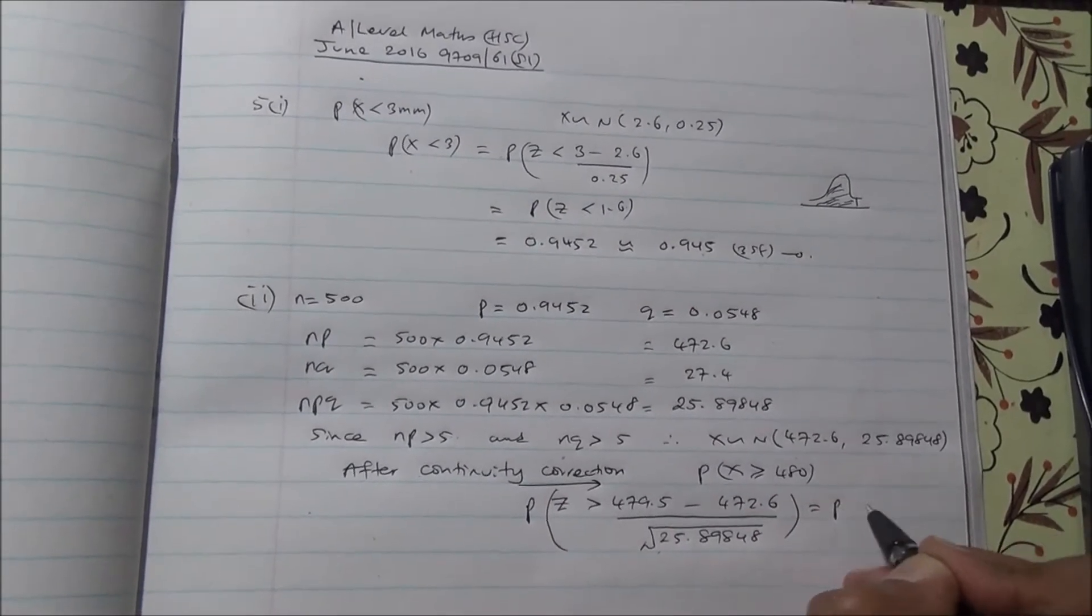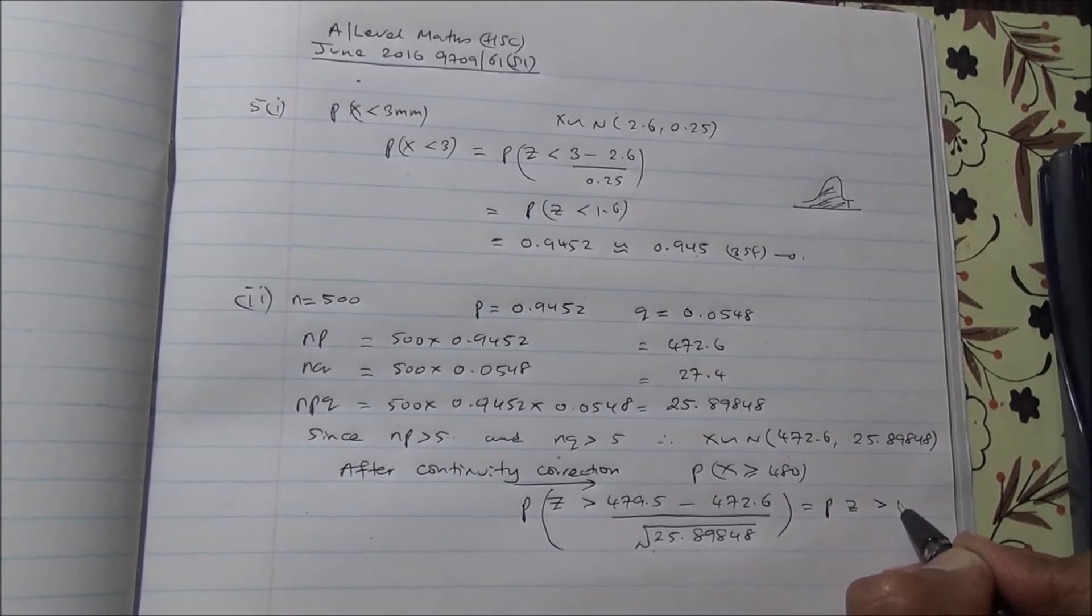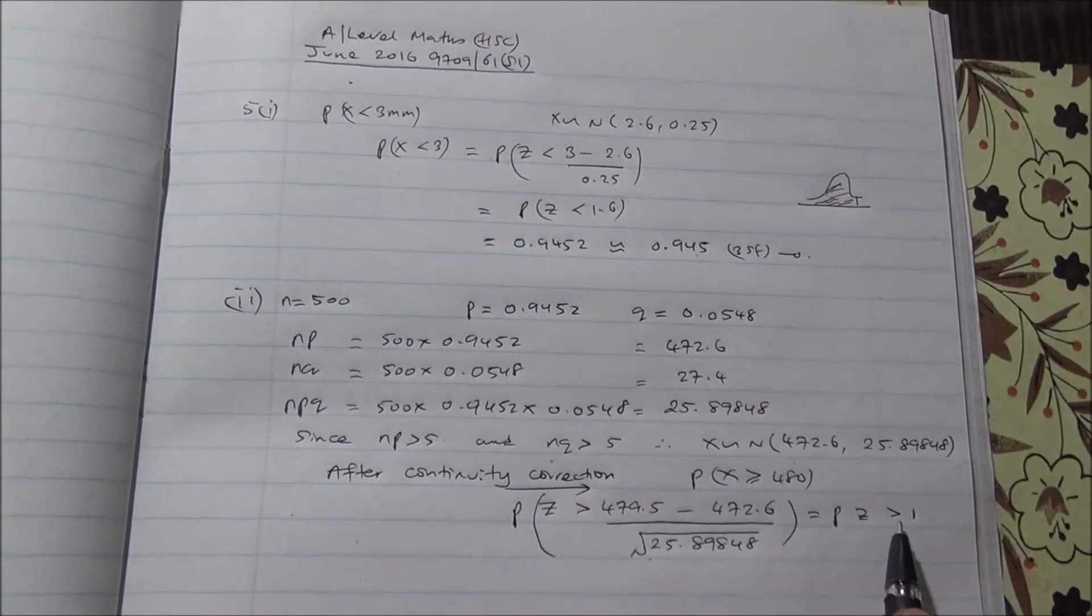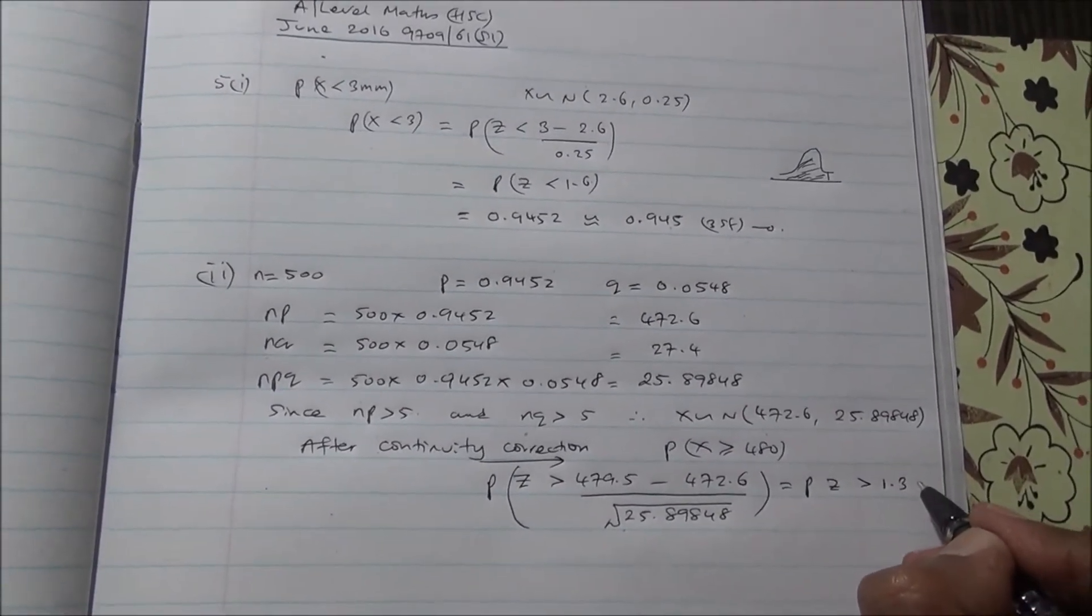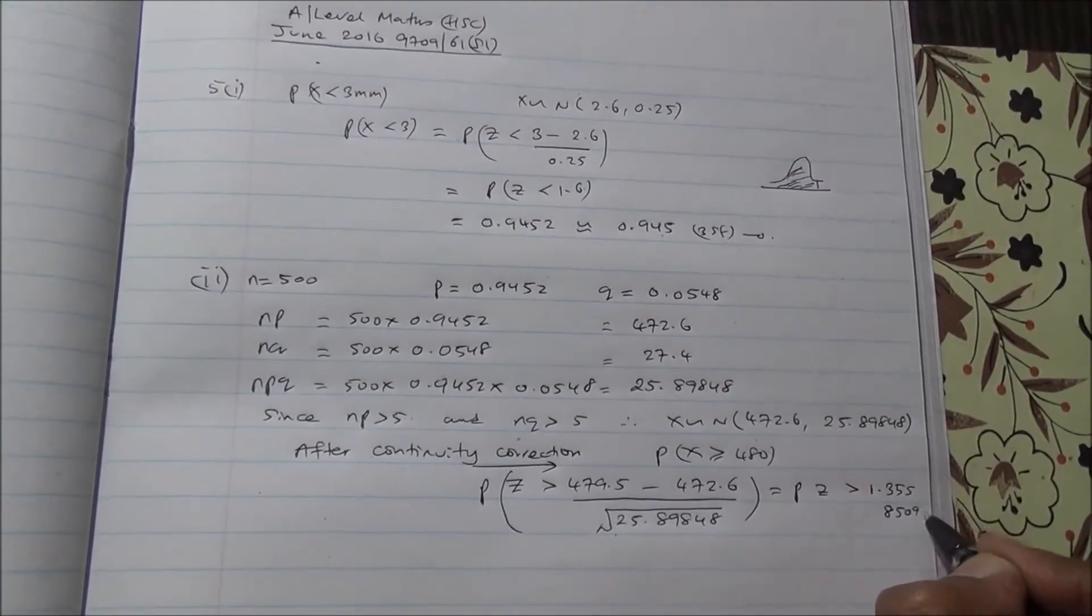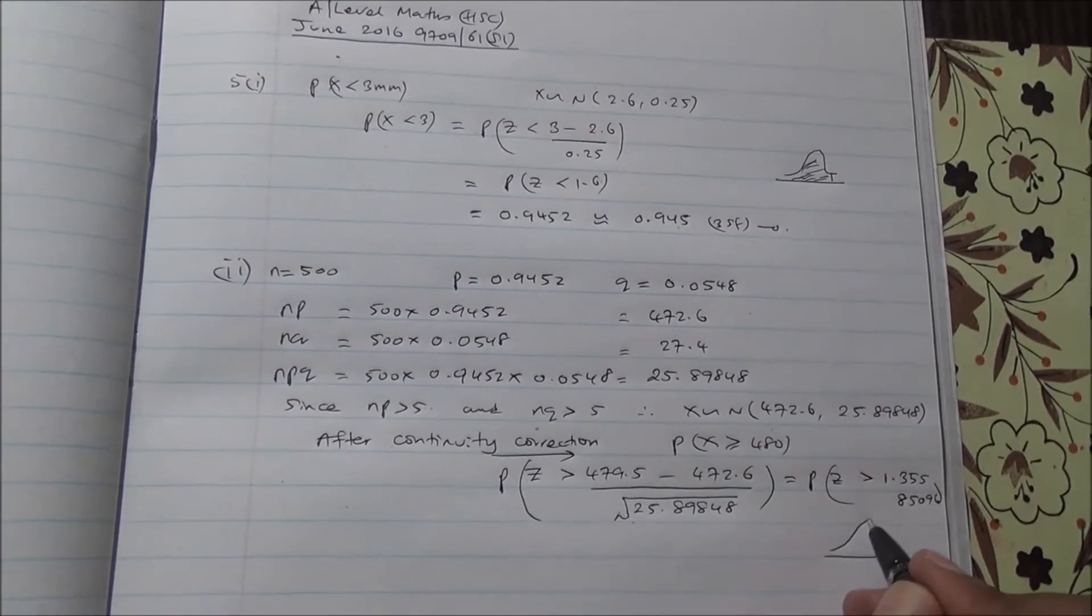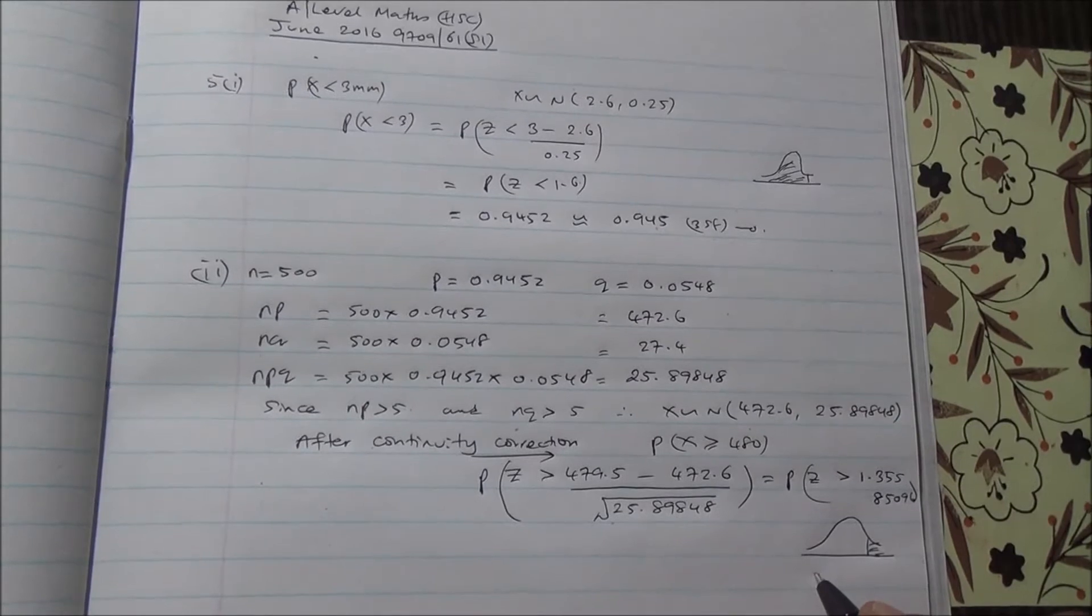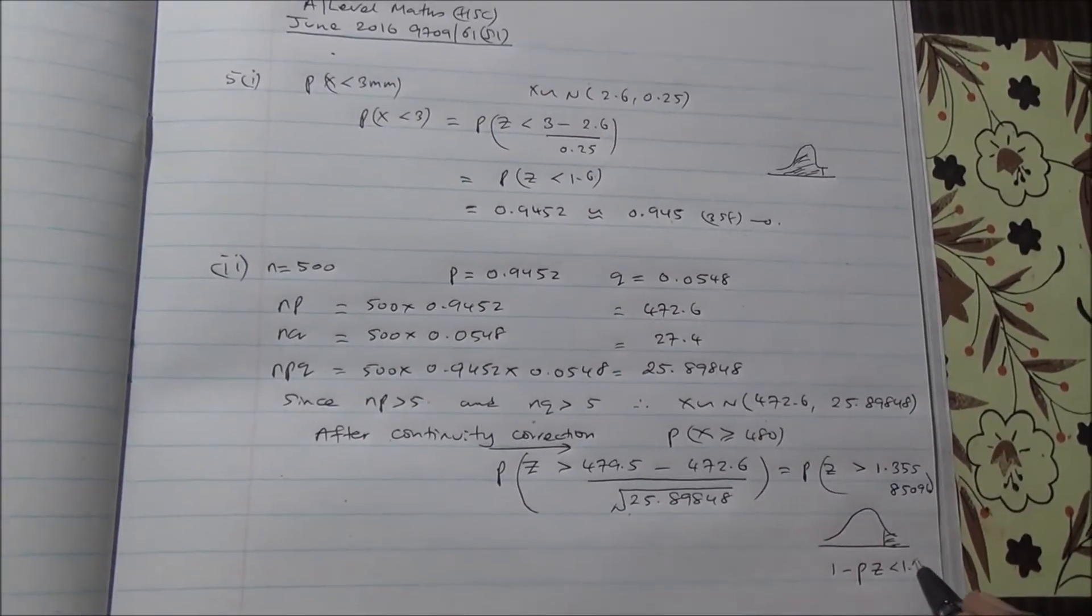You work that out and calculate, you're going to end up with P(Z > 1.36). If you work this out, you're going to end up with 1.35585096 and so on. Clearly looking at the graph, we're looking at this part here. It's going to be 1 minus P(Z < 1.36).